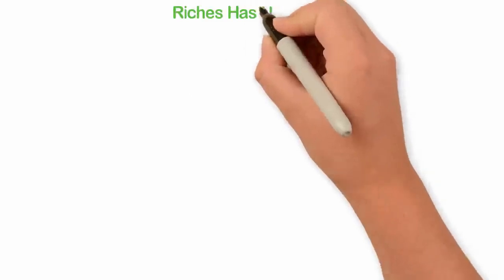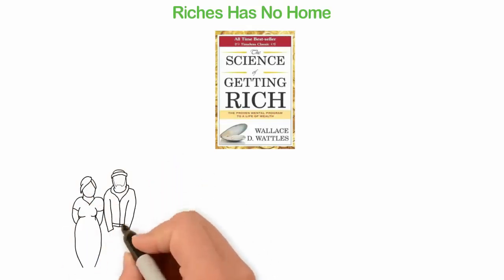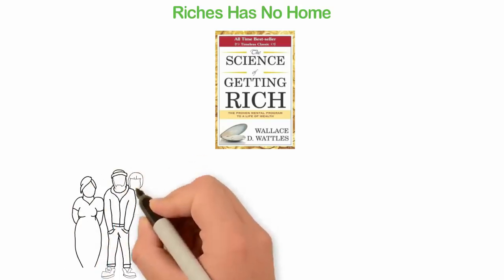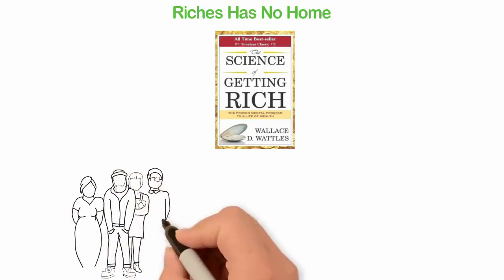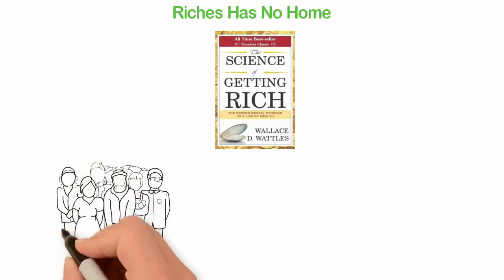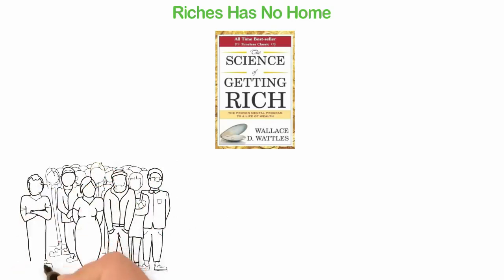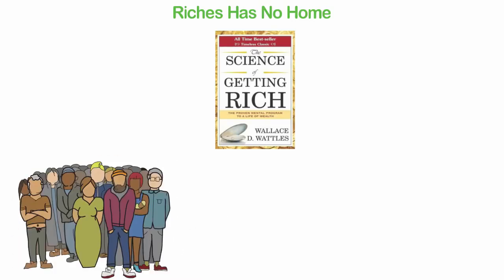Riches has no home. In his book, The Science of Getting Rich, Wallace D. Wattles provoked us to think about something very important. He asked us to stop thinking about poverty as though it's caused by certain geographical location, because if poverty has something to do with a particular geographical location, then certain people in certain geographical locations will be poor while everybody else will be rich.